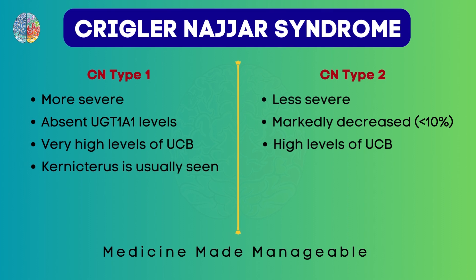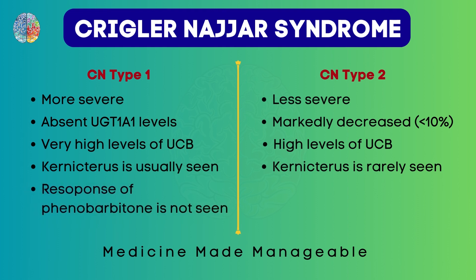Kernicterus, which is brain damage seen due to high levels of bilirubin, is usually present in type 1, because unconjugated bilirubin levels are very high. But in type 2, kernicterus is rarely seen. Finally, response to phenobarbital is not seen in type 1, but in type 2 some response is seen. Phenobarbital is an enzyme inducer — since in type 1 there are no enzymes to induce, no matter how much phenobarbital you give, there is no response. But in type 2, since there are at least some enzymes working, if you give phenobarbital, there will be a good response.